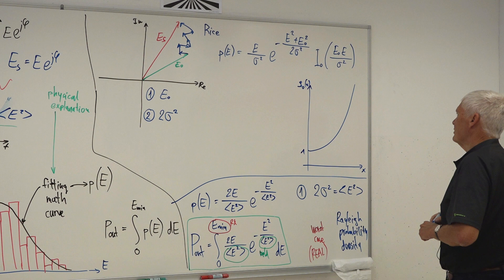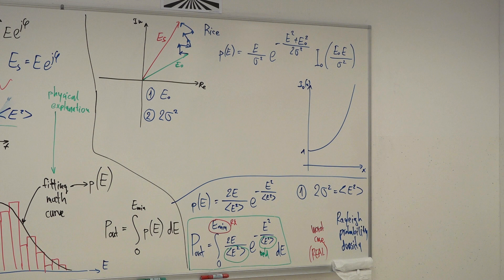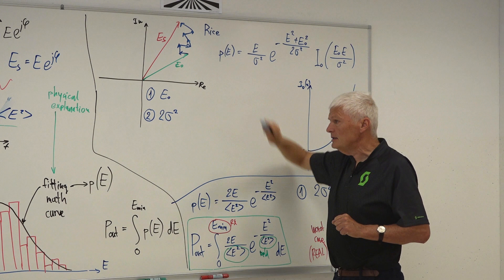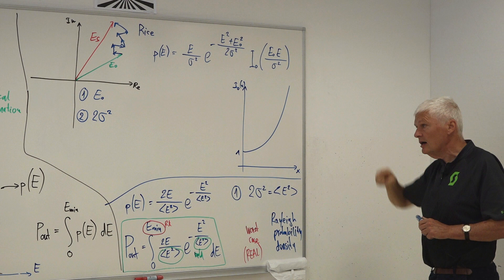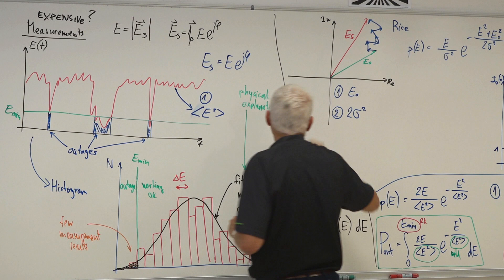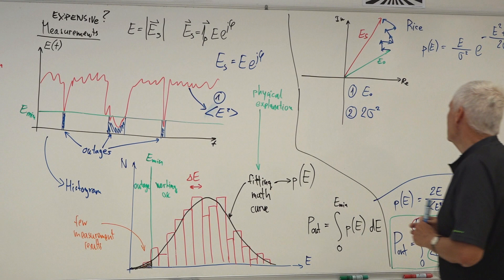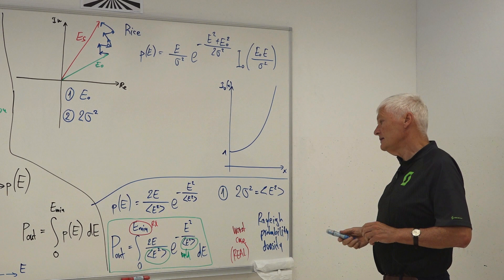We are not going to derive it, because the Rice distribution gives us a better probability distribution. But it requires more complicated measurements — here we need two parameters: the direct ray E0 and the average value of the scattered contributions (2σ²), compared to just one parameter for the Rayleigh distribution. This is the probability density for the Rice distribution.